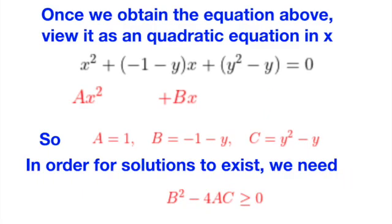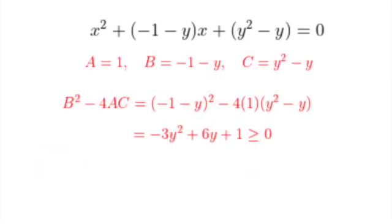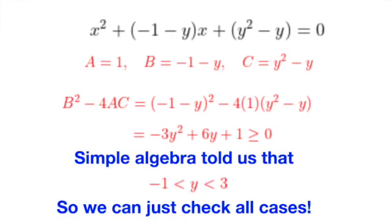Recall that we are trying to find integer solutions in x and y, and in order for the quadratic equation to have any real solutions in x at all, we require the discriminant b² minus 4ac to be larger than or equal to 0. Putting everything together, we see that this implies minus 3y² plus 6y plus 1 must be greater than or equal to 0. Some simple graph sketching tells us that y must be between minus 1 and 3 for this to happen.